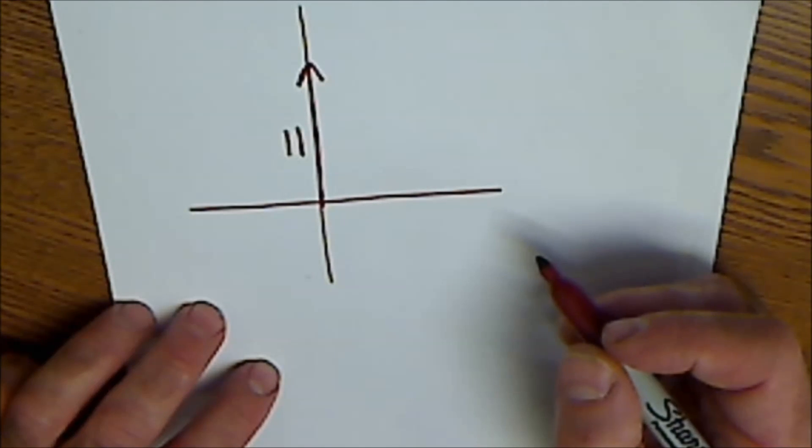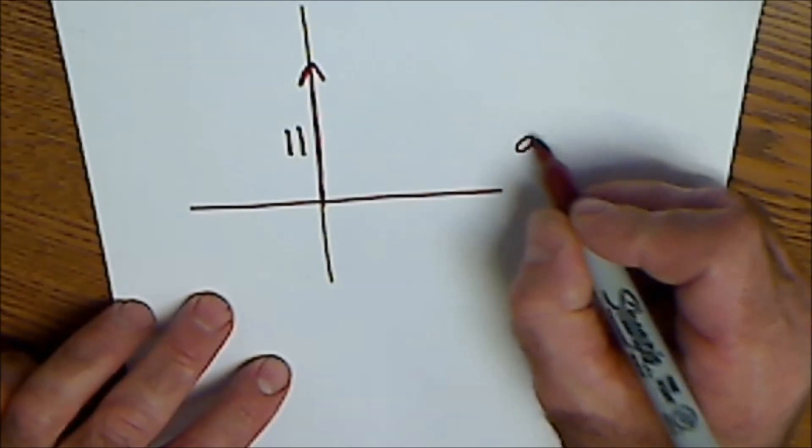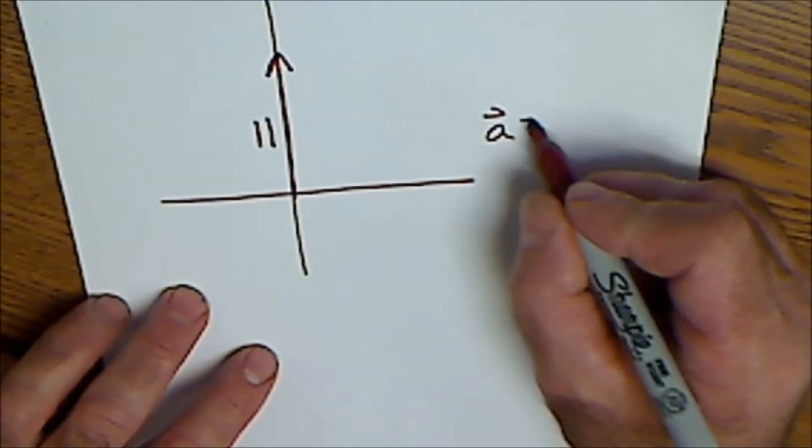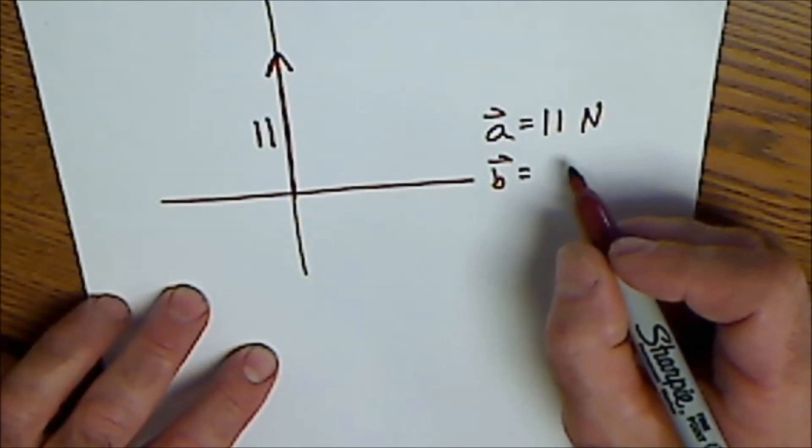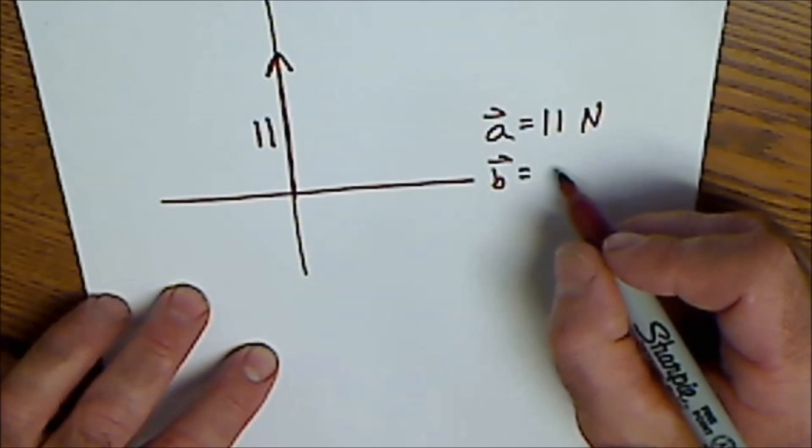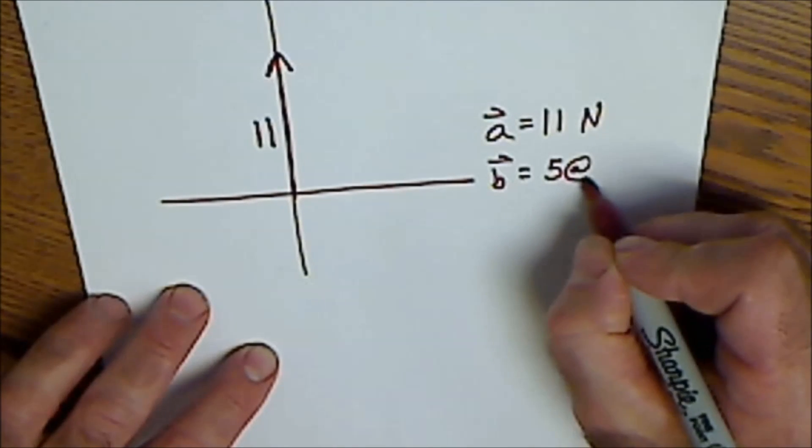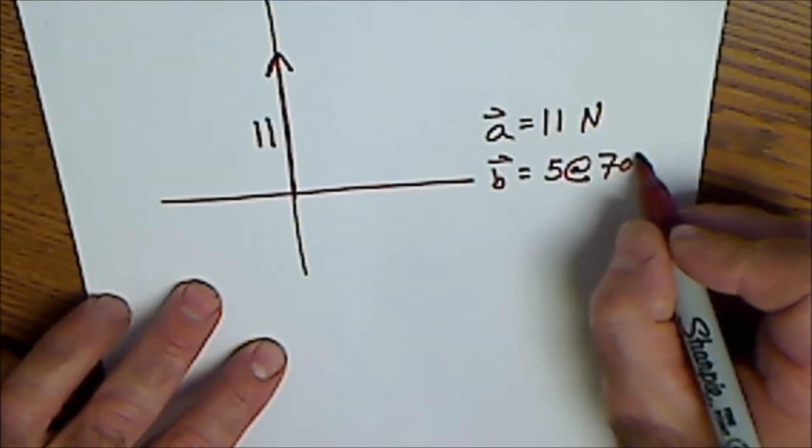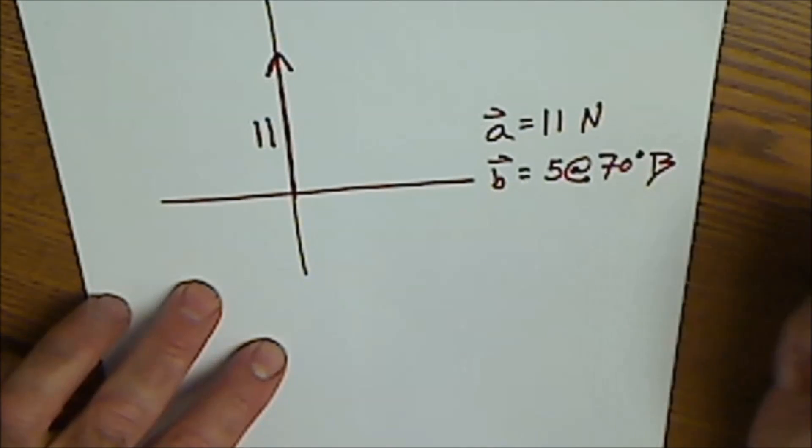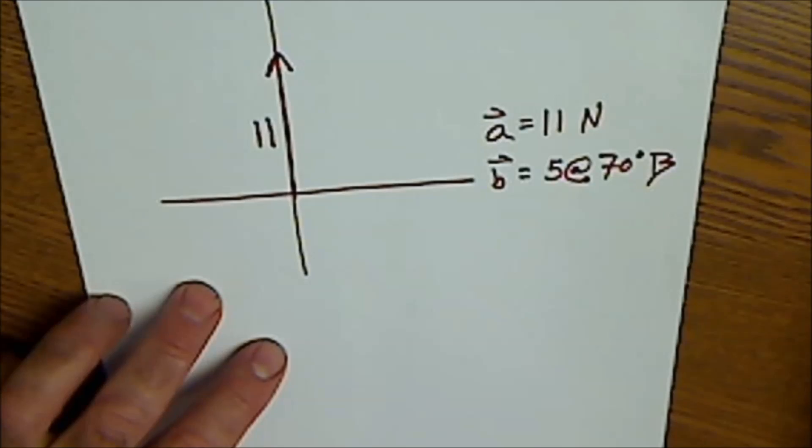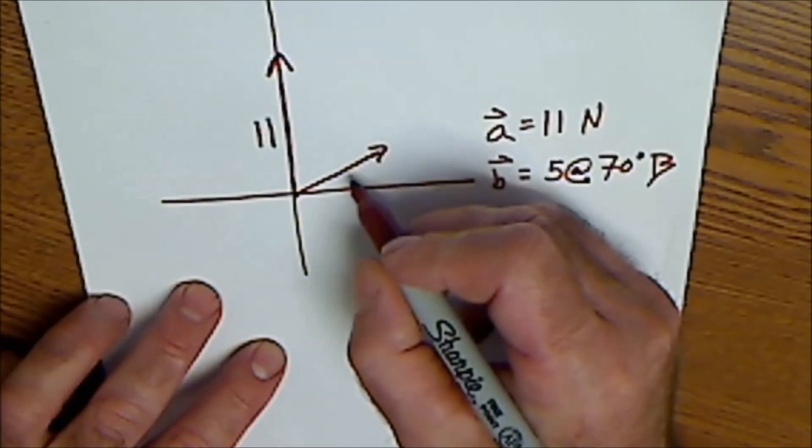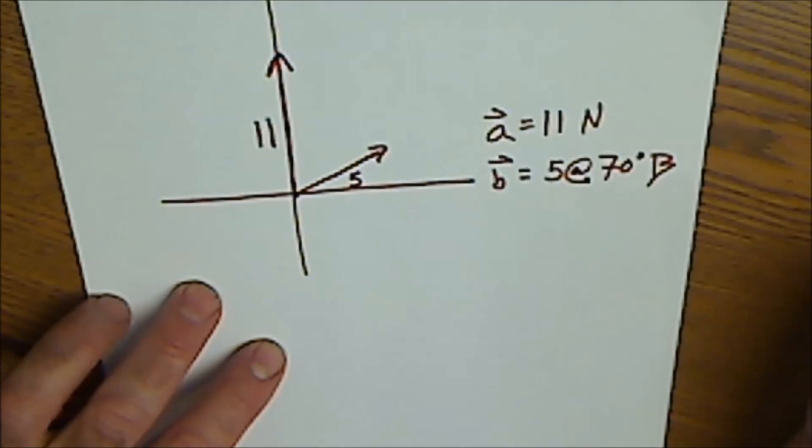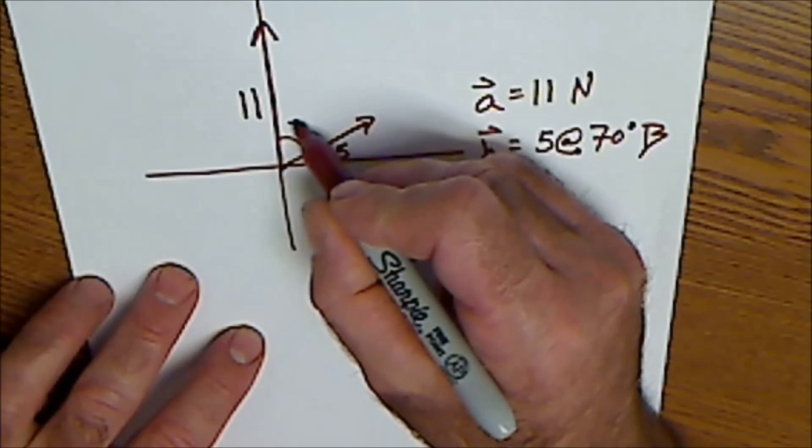Followed by a second vector at a bearing of 70 degrees. So my first vector A is 11 units due north. My second vector B is 5 units at 70 degrees, but this is a bearing, meaning I'm going clockwise off of north. So my second vector is this one right here. It's 5 units long and it's 70 degrees off of north.